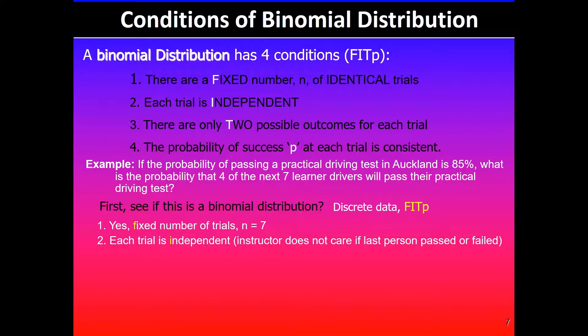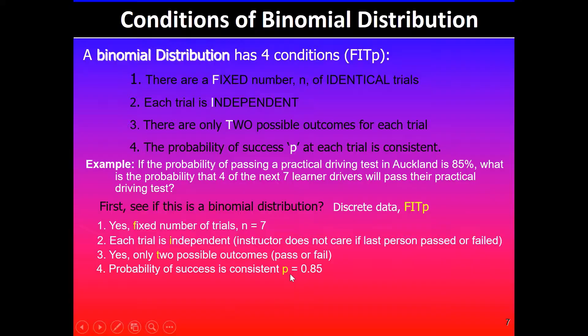Third one is there are only two possible outcomes: the learner driver will either pass or fail the driving test. The last one, probability of success is consistent. In this case we are told that the probability of passing a practical test in Auckland is 85%, so the probability is 0.85. We are confident that it meets all the four conditions of binomial distribution.